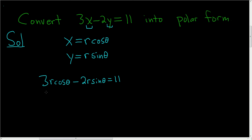Let's go ahead and solve this for r. So we'll factor out an r. I'll use a bracket. So we have 3 cosine theta. And then here we're factoring out the r, so we're left with 2 sine theta. And this is equal to 11.